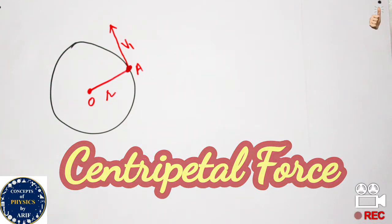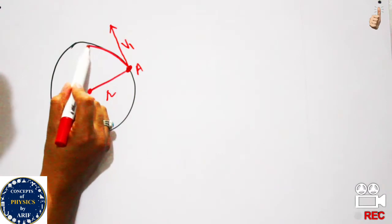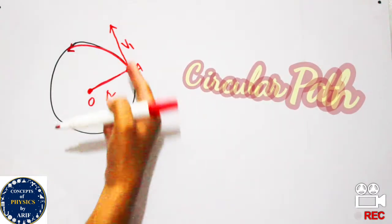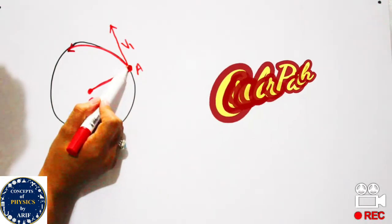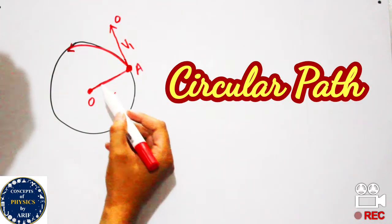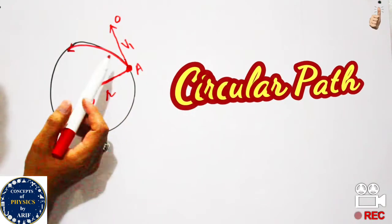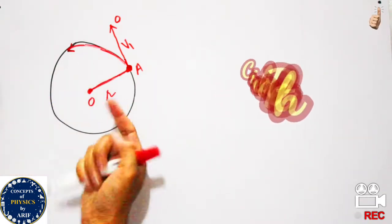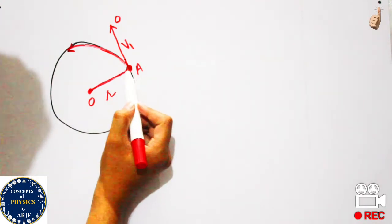Centripetal force is the force needed to bend a particle moving in a straight path and attract it into a circular path. For example, when a body of mass m is attached with a string of radius r and moving in a circular path, it tries to move in direction OA with velocity v, making a tangent perpendicular to the radius. The force that bends it into the circular path and prevents straight-line movement is known as centripetal force.